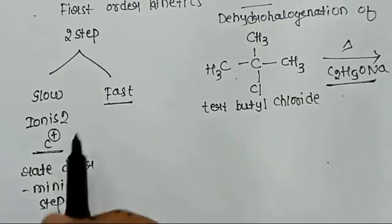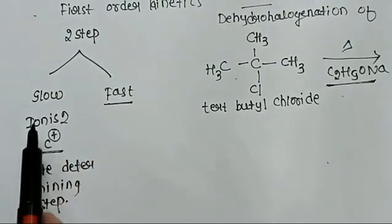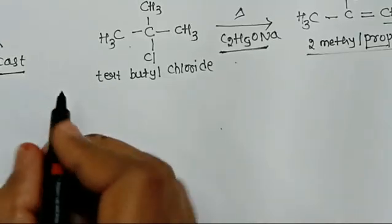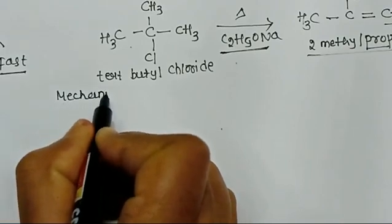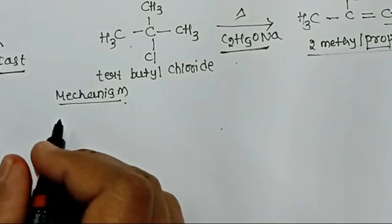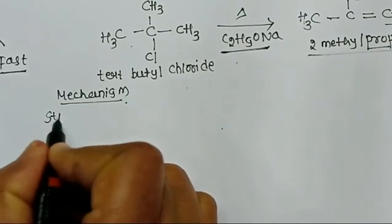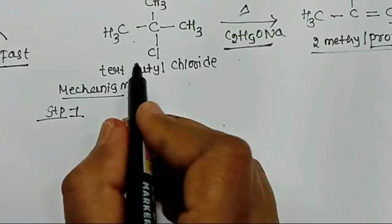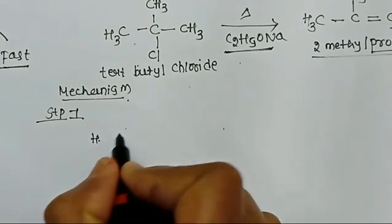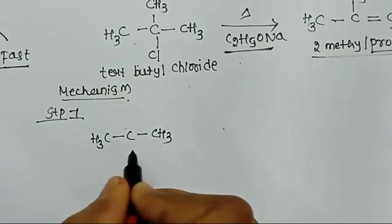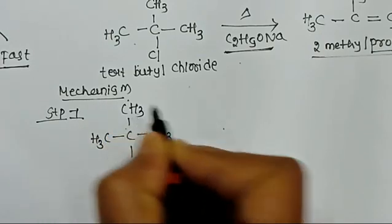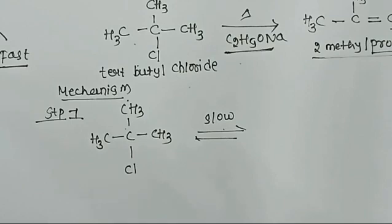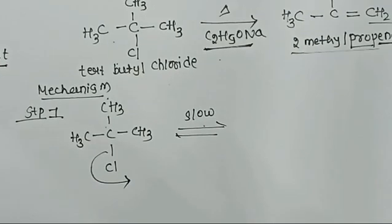Let us see the mechanism. It is a 2-step reaction. The first step is slow ionization forming the carbocation; the second step is the fast step. Step one: slow ionization of tertiary butyl chloride. First write down the tertiary butyl chloride formula: CH3-C(Cl)-CH3 with CH3. It undergoes slow ionization with the elimination of the Cl.